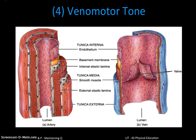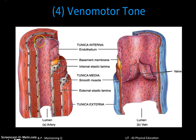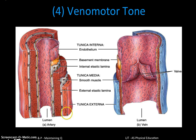Fourthly, we have venomotor tone. Venomotor refers to our veins, and tone refers to stimulation of the muscular wall in veins. Smooth muscle is present in blood vessel walls — in arteries it's a much thicker layer, but there is a layer in veins. Our autonomic nervous system stimulates the contraction of this smooth muscle, which squeezes the lumen slightly, and that pressure helps return blood to the heart.